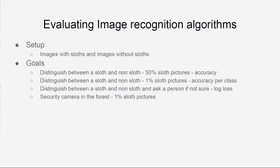Now imagine you have a temple in a tropical forest that is frequently raided by slots. You want to install a camera that tells you when slots are approaching so you can do something about it. Of course, in only a small percentage of cases will there be slots in the picture. We could use accuracy per class, but we don't really care that much if we get a picture without a slot and the algorithm says it has one. It is far more important that when there is a slot in a picture, we know about it.